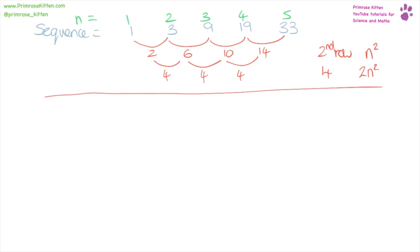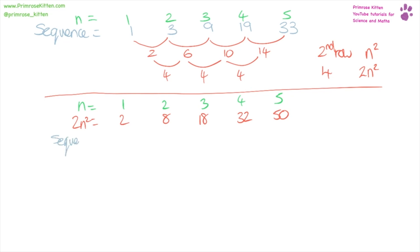Now we have two n squared as the start of our expression. For n = one, two, three, four, five, two n squared gives us two, eight, 18, 32, and 50. Now we can look at our original sequence, which is one, three, nine, 19, and 33.